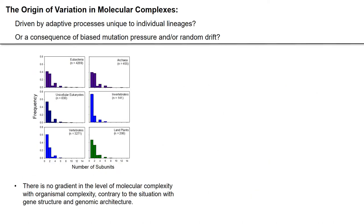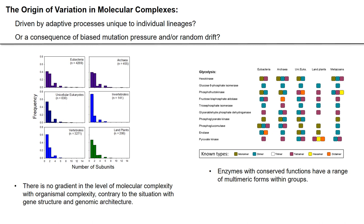Where does this variation come from and how is it distributed across the tree of life? If you sum up all of the known structures and the number of subunits in different phylogenetic lineages, you'll find in general negative exponential type distributions, and also see that there's no gradient in the level of molecular complexity with organismal complexity. This is quite contrary to the situation with gene structure and genome architecture — the number of multimeric subunits is essentially the same in large multicellular species as it is in prokaryotes. This lack of association between molecular and organismal complexity is not an artifact of sampling bias. If you focus on a set of enzymes with conserved functions across the tree of life, such as those involved in glycolysis, you see many alternative forms within phylogenetic lineages, but again no gradient of increasing molecular complexity with organismal complexity. The overall implication is that there's tremendous freedom for the multimeric states of proteins to wander over the evolutionary landscape — all of this has the flavor of random genetic drift governing the process.